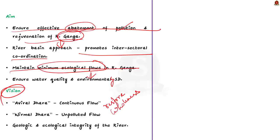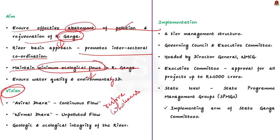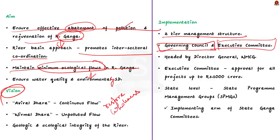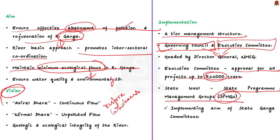NMCG has a two-tier management structure comprising a governing council and an executive committee, both headed by the Director General of NMCG. The executive committee is authorized to accord approval for all projects up to Rs. 1,000 crore. At the state level, State Program Management Groups (SPMGs) act as the implementing arm of state Ganga committees. This structure brings all stakeholders on one platform for a holistic approach to Ganga cleaning and rejuvenation.